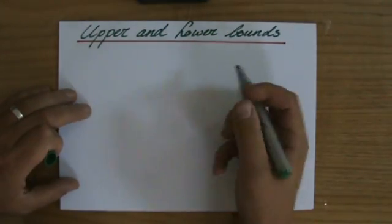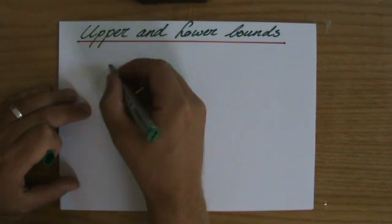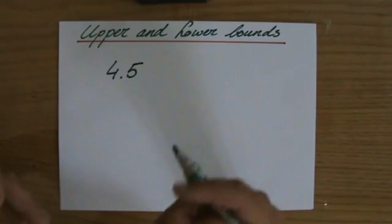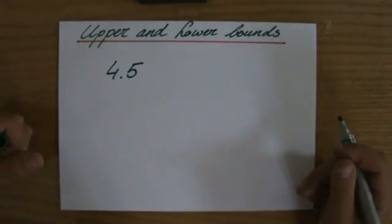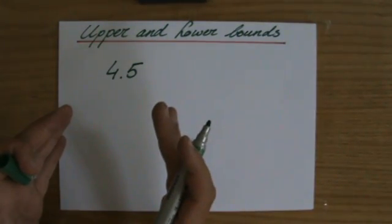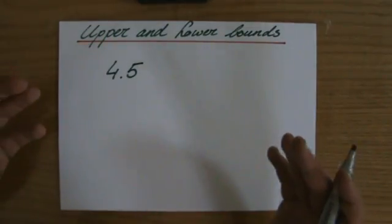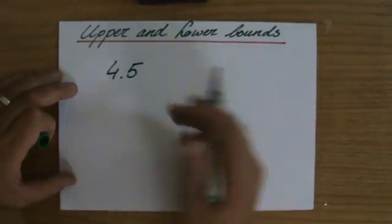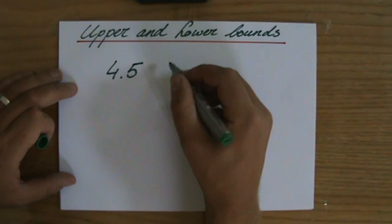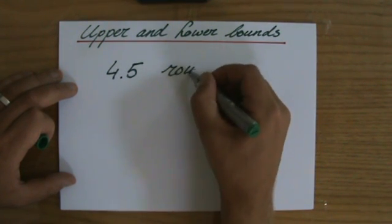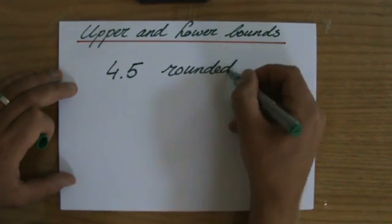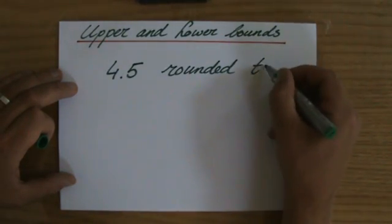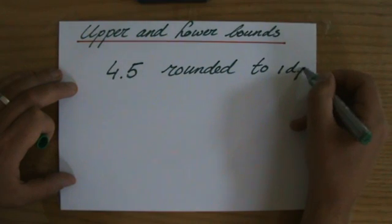Now let's say they give me a number 4.5. And they always tell me with these types of questions to how many decimal places or to which number they have rounded it. So let's say they give the number 4.5 rounded to one decimal place — so 4.5 has been rounded correctly to one decimal place. And then you have to find the upper bound and the lower bound.